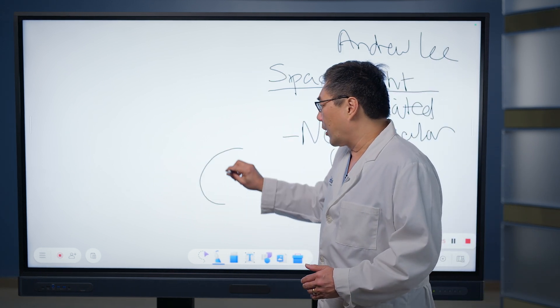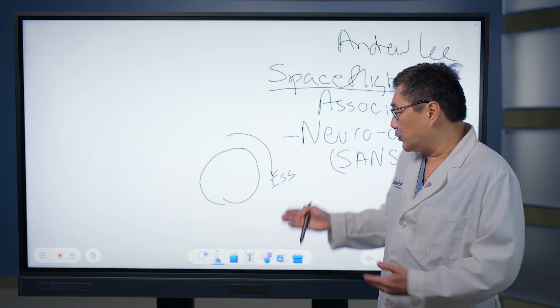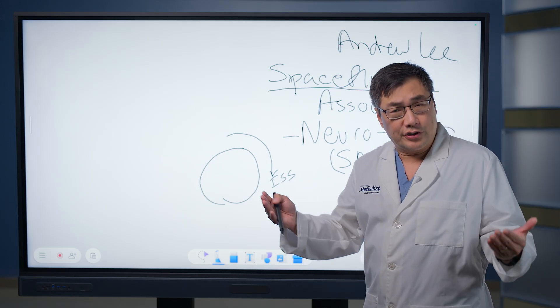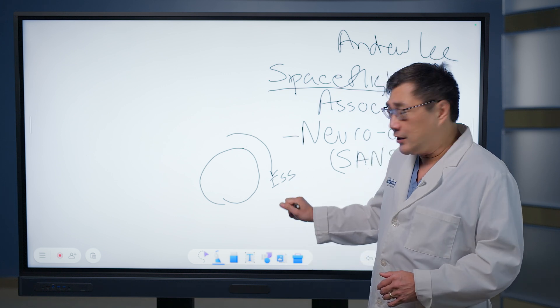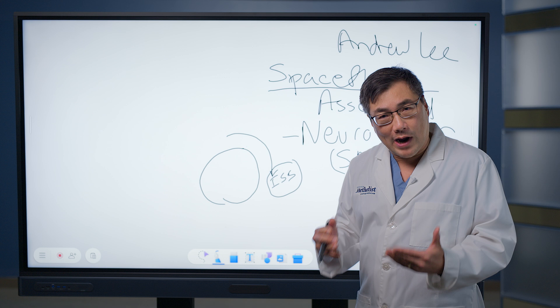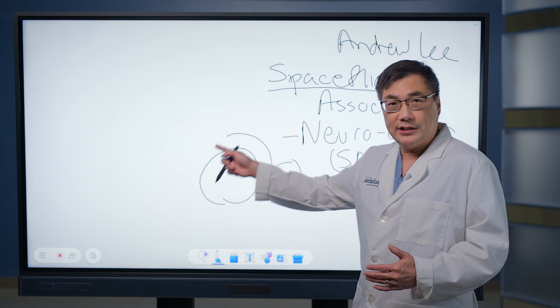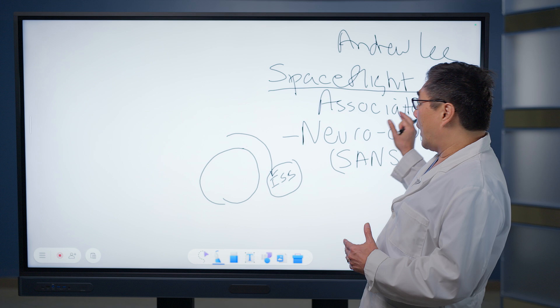So here we are on our planet, planet Earth, and orbiting our planet is the International Space Station. NASA, as well as our partners in other countries - the Canadians, Russians, Europeans, and Japanese - have an International Space Station. And because there's no gravity, because the station is in low orbit, the eye has neuroocular findings.